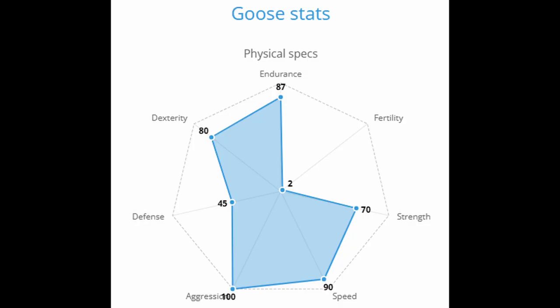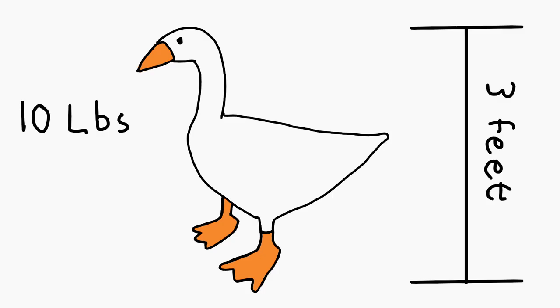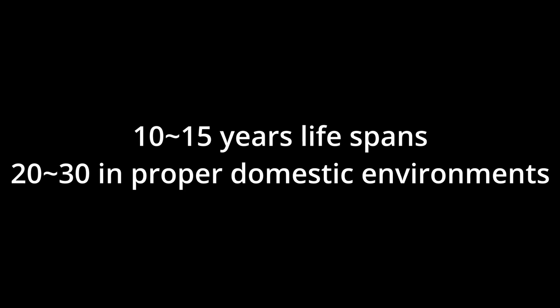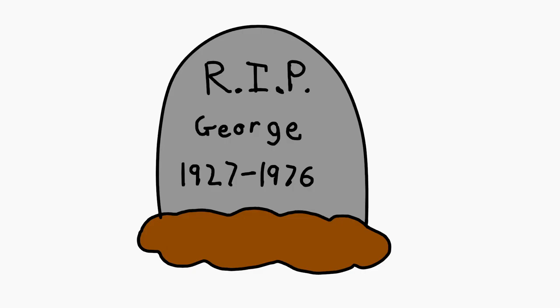Onto some of the physical specs for geese. Geese are on the larger side when it comes to birds, standing at an average of 3 feet tall with a 4-foot wingspan, and weighing about 10 pounds for most species. Wild geese will live around 10 to 15 years, and domestic geese can live longer when given proper care, increasing their lifespan to 20 or 30 years. The oldest goose to ever live was a gander named George, born in 1927 and living all the way until 1976 — a total of almost 50 years.